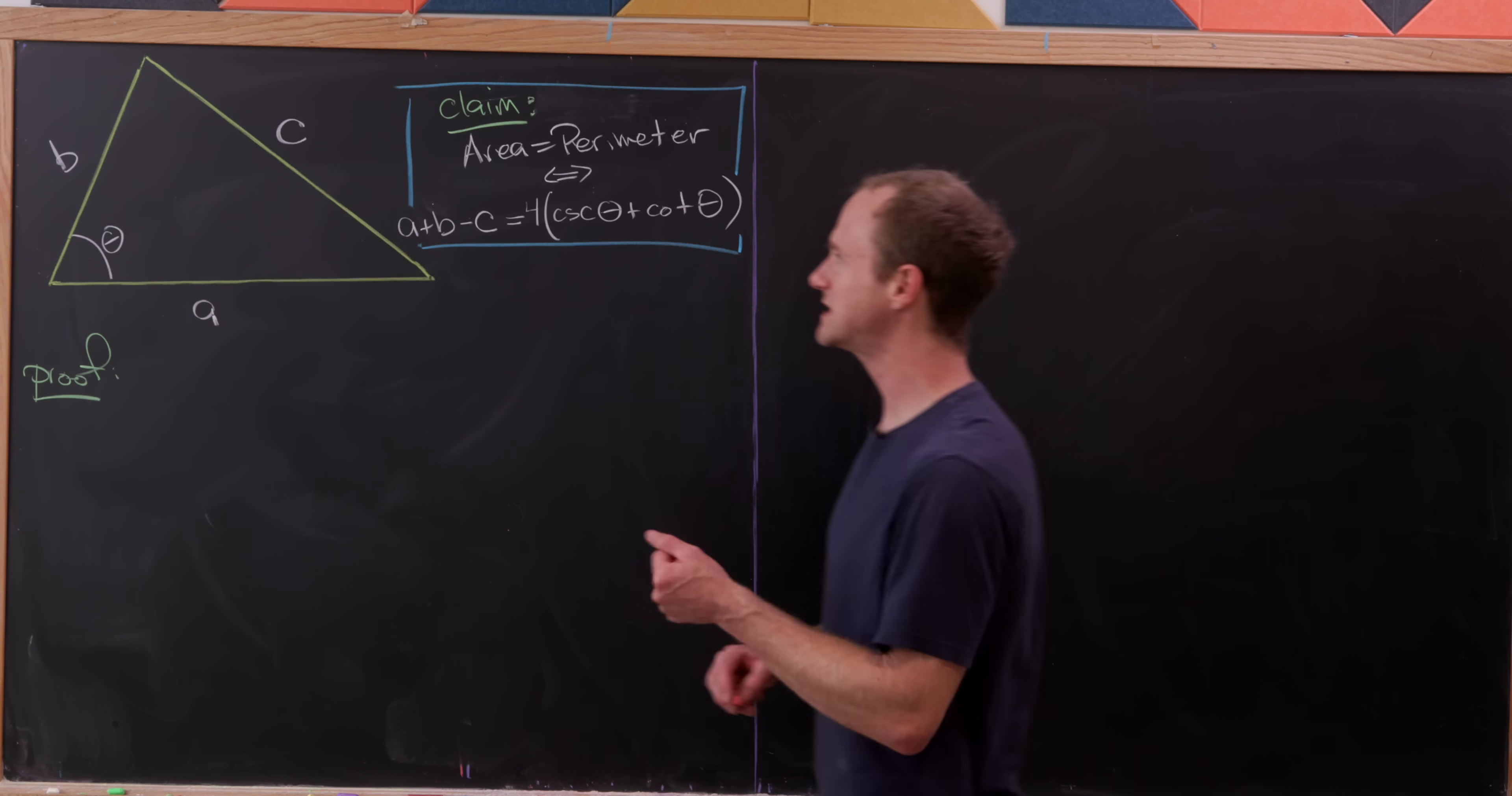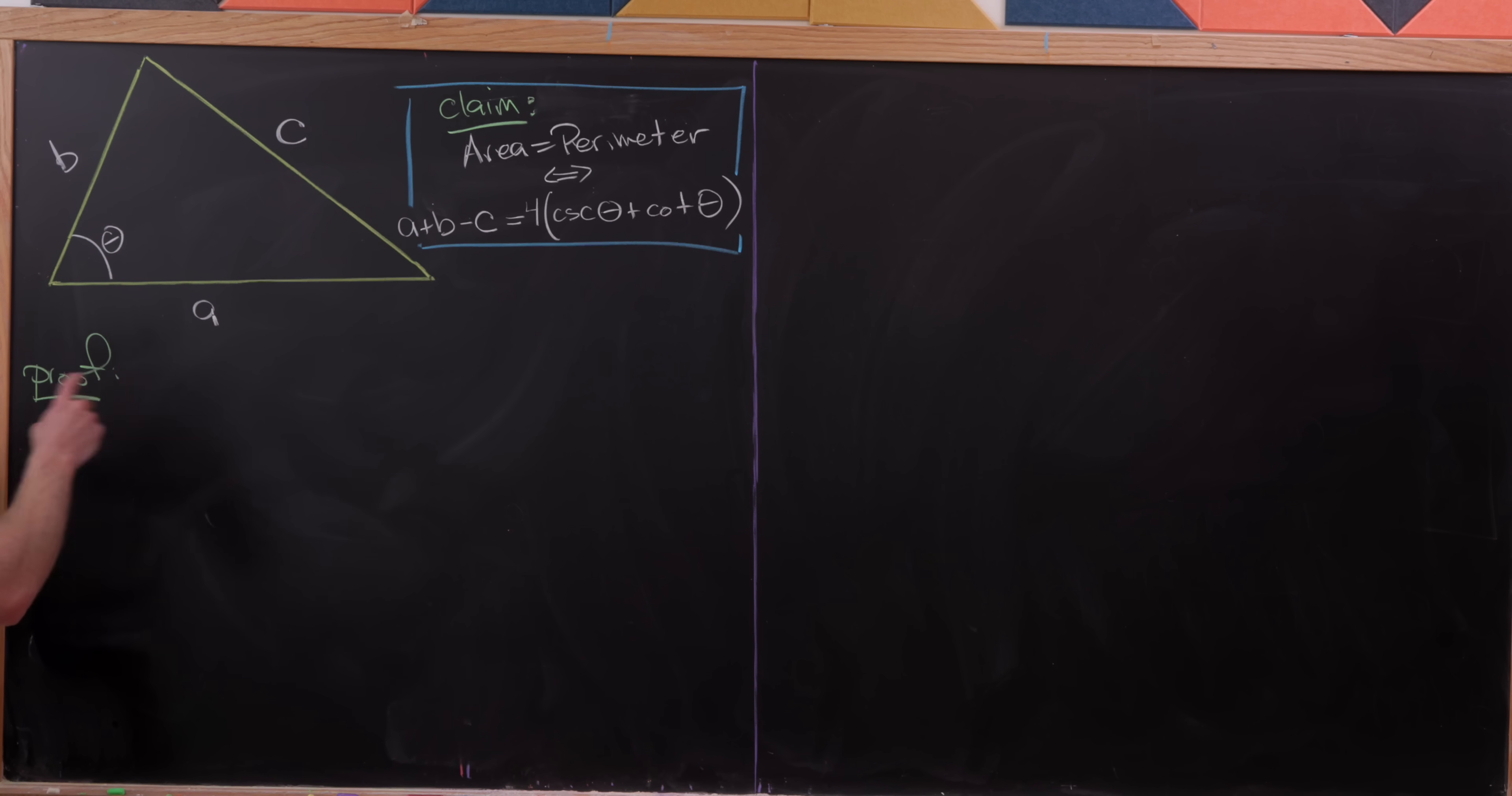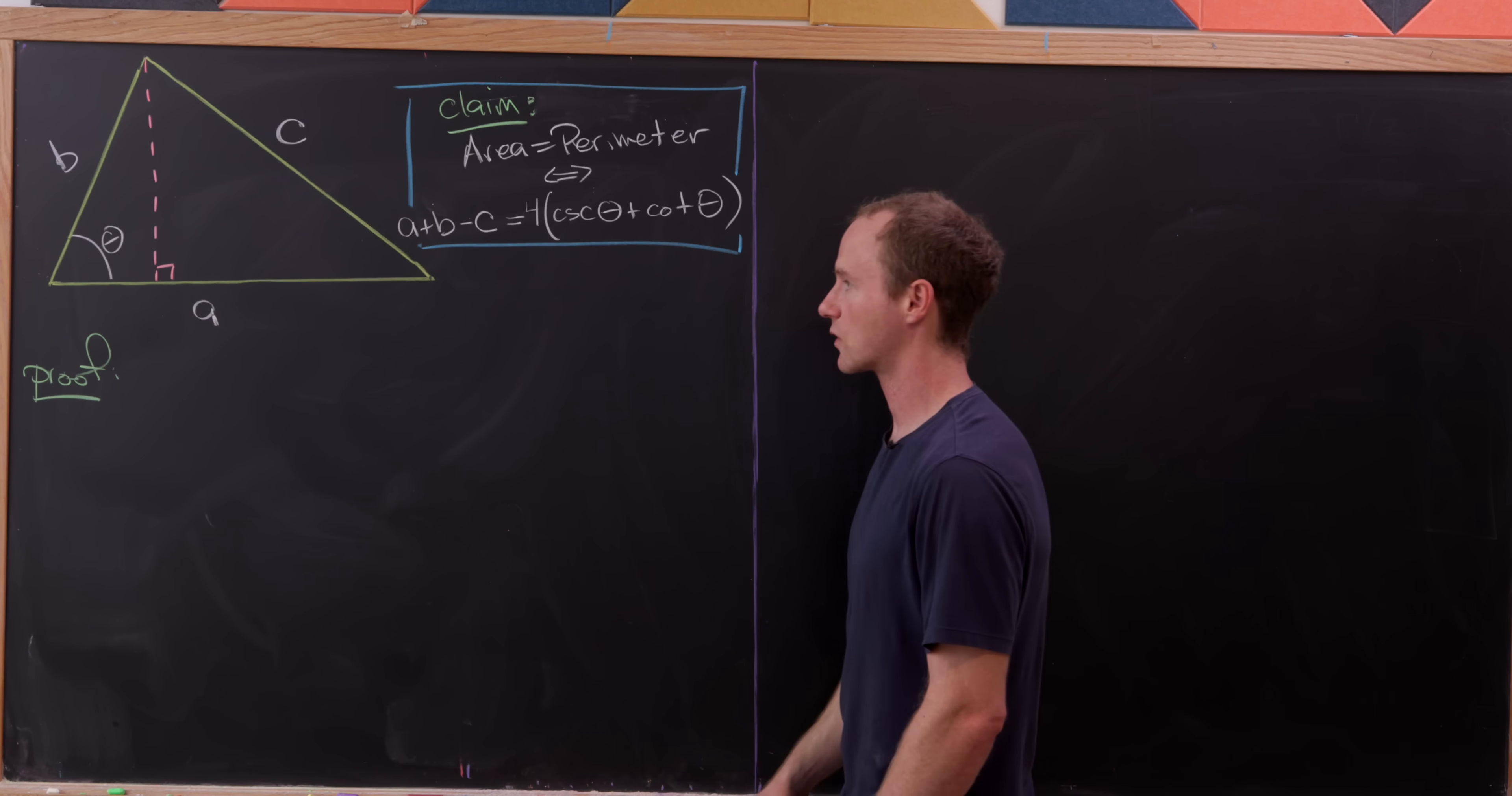Okay, so let's get into it. The first thing we need to do is express the area in terms of maybe a, b, c, and theta. Probably not all of those quantities, but a few of them. So what I'll do is I'll drop a perpendicular line so that it bisects a, or the side a, at a right angle.